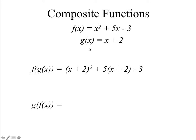If we flip that, looking at this notation for g of f of x, it's taking function f of x and putting it into g. So where we see x in g, we're going to put this whole trinomial x squared plus 5x minus 3 into here. So it's going to look like x squared plus 5x minus 3 plus 2. Take a second to simplify that — you might want to stop the video.